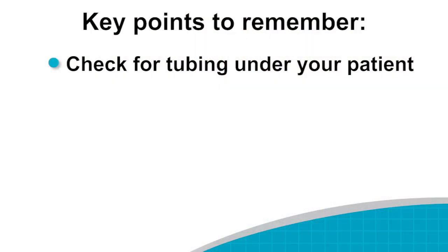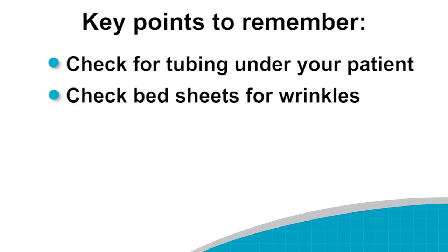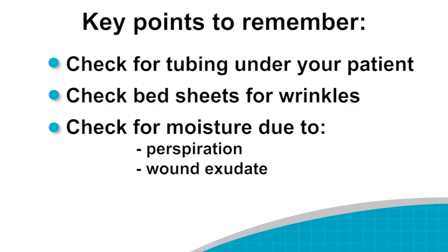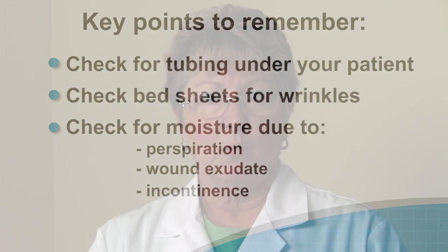As we start the back examination, there are certain key points to keep in mind. First, we need to check for any tubing the patient has been laying on that could be causing areas of pressure. Another area of pressure is the sheets themselves — if they've become wrinkled, they will cause damage to the skin in areas of pressure. We also need to look for moisture, which can come from perspiration, wound exudate, or incontinence. Moisture will pool in the lowest spot, getting the bed wet and causing maceration of the skin, and when we move the patient, friction can cause further damage.